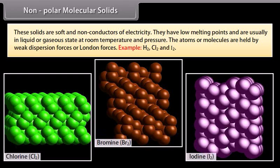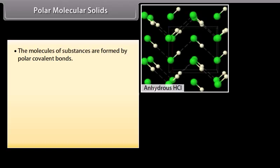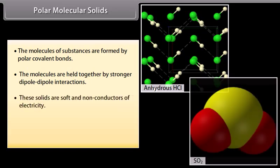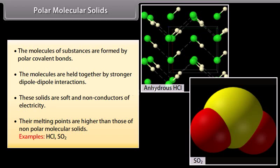Polar molecular solids: The molecules of substances are formed by polar covalent bonds. The molecules are held together by stronger dipole-dipole interactions. These solids are soft and non-conductors of electricity. Their melting points are higher than those of non-polar molecular solids. Examples: HCl, SO2.